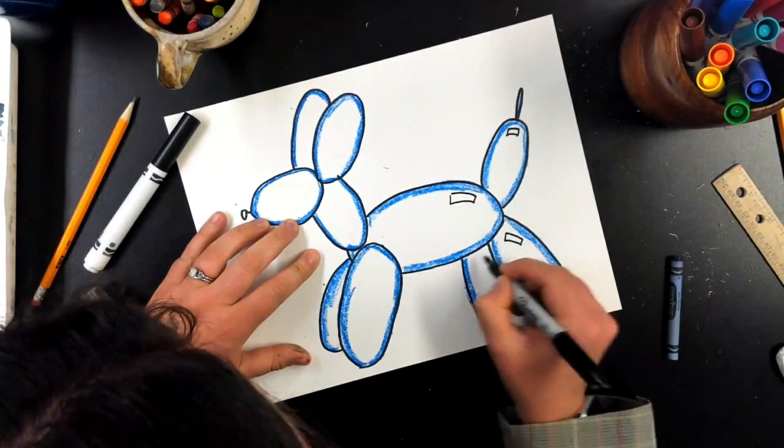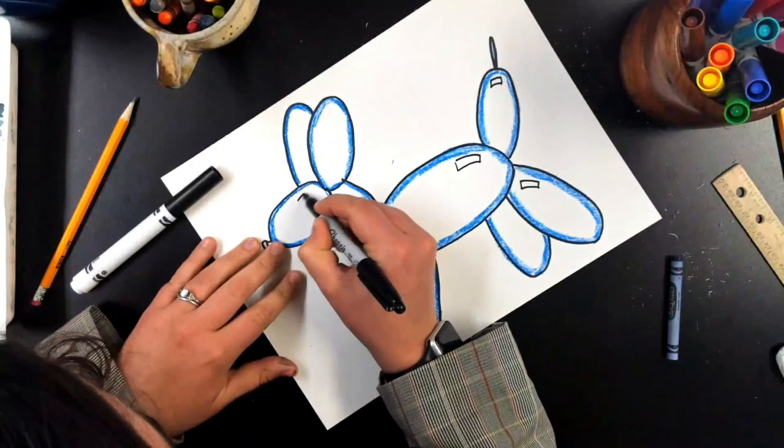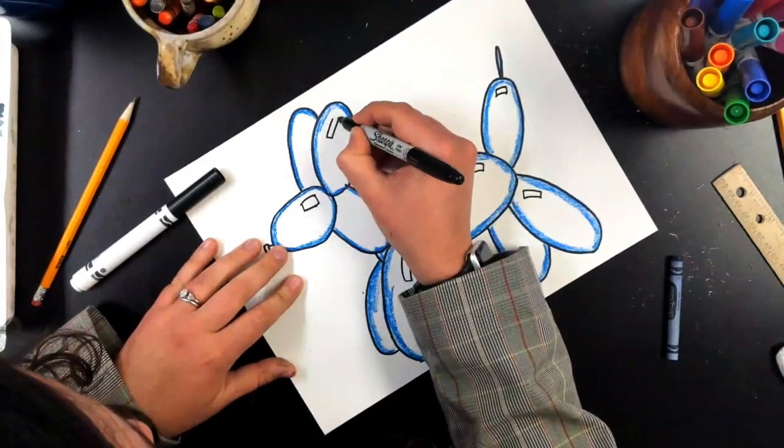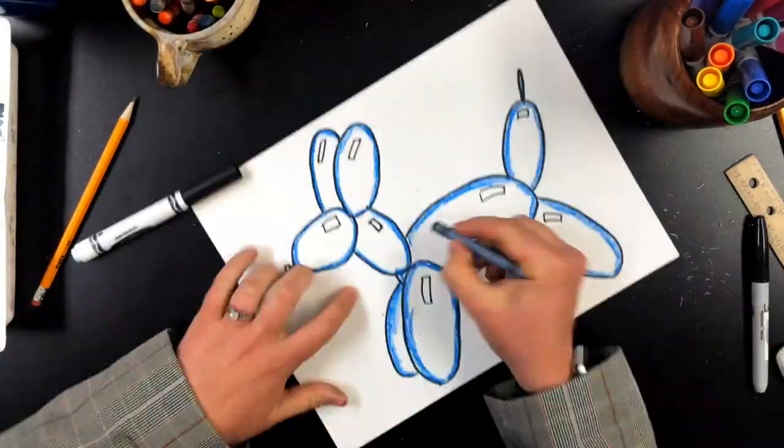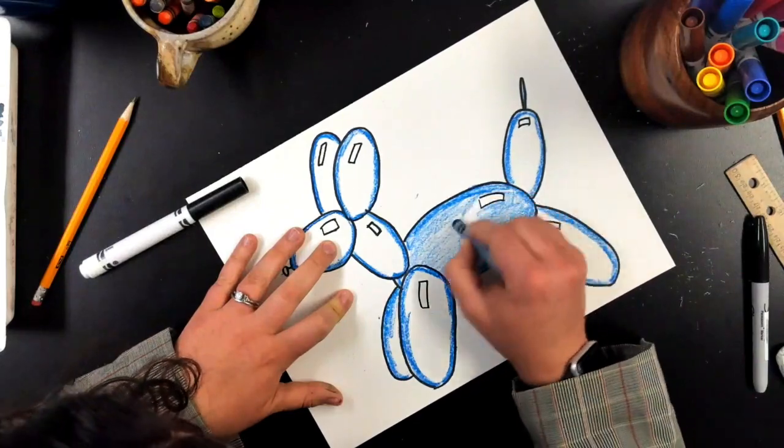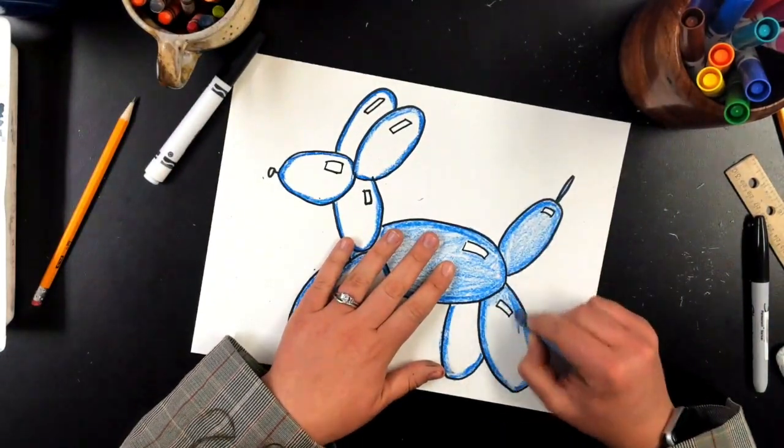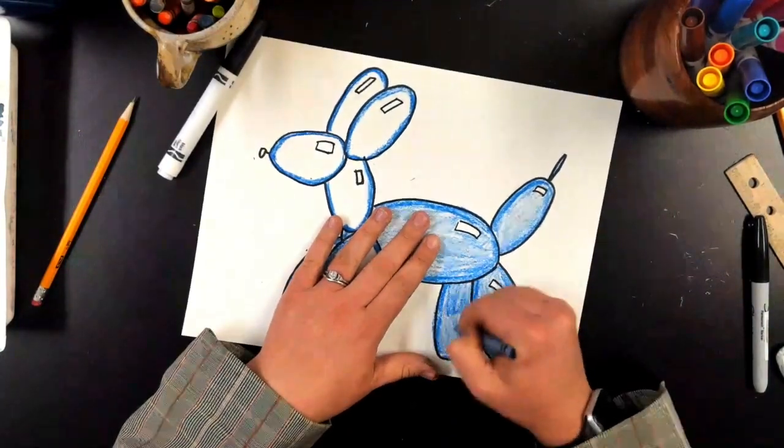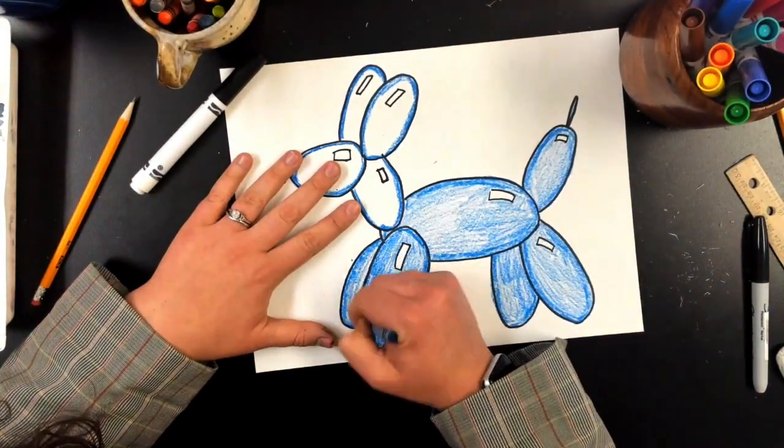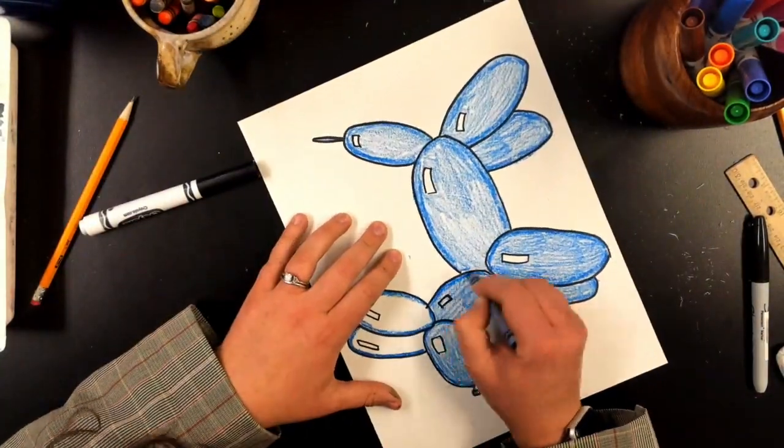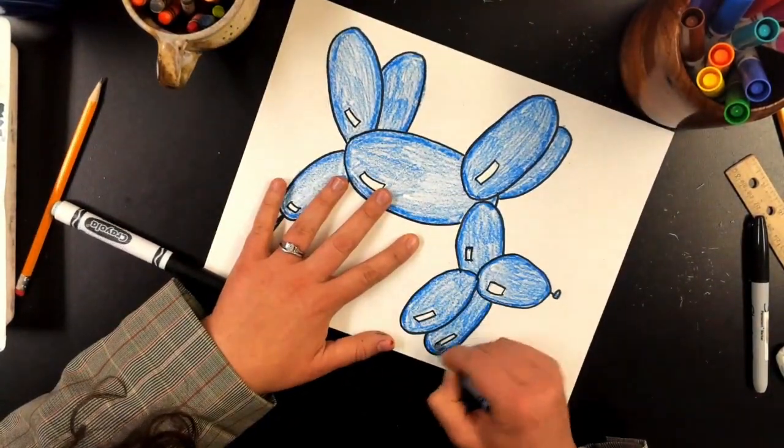After you have outlined each of your ovals with a crayon it is time to add our highlight and I'm going to do that by writing in those rectangles. You could do it with a black marker or black crayon. But once I have those highlights I can color the whole thing in.